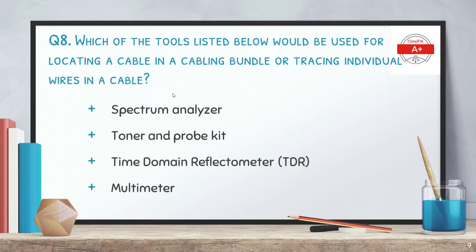Question 8: which of the tools listed below would be used for locating a cable in a cabling bundle or tracing individual wires in a cable? Options are spectrum analyzer, toner and probe kit, time domain reflectometer (TDR), and multimeter. The correct answer is toner and probe kit.